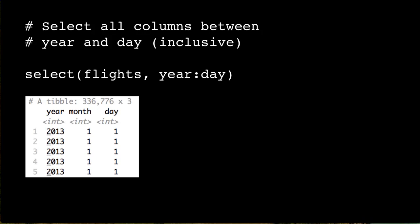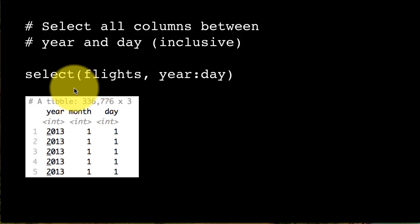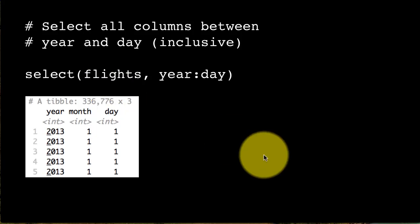You might notice I used the phrase 'data frame' whereas flights is actually a tibble. From this point on I'll use the terms data frame and tibble somewhat interchangeably, because tibbles are after all data frames, and all dplyr functions also work on regular data frames. You can pass a tibble or a regular data frame to any dplyr function — in most scenarios the two are interchangeable.